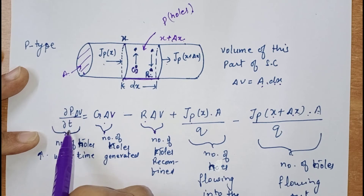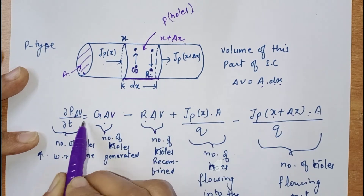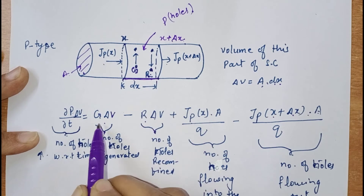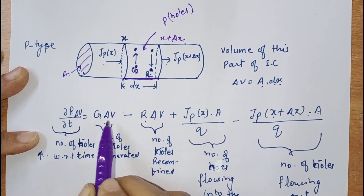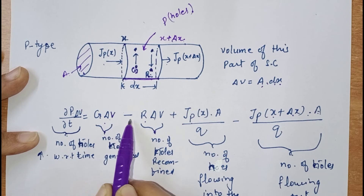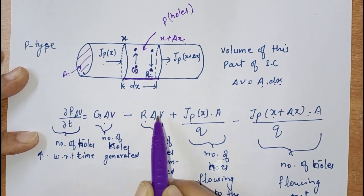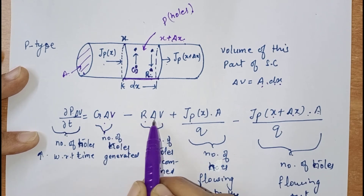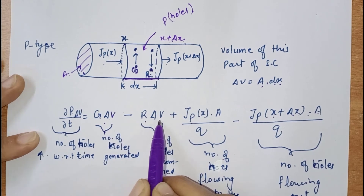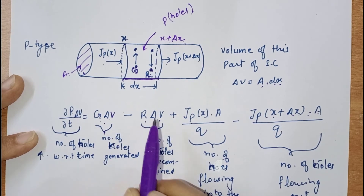We can write the change in hole concentration with respect to time in this particular volume as: generation of number of holes in this volume minus recombination of holes in this particular volume. This accounts for generation and recombination.